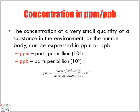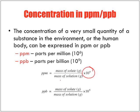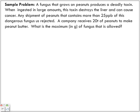We're going to use the following equation for parts per million: mass of the solute in grams divided by the mass of the solution in grams, but we're not multiplying it by 100, we're multiplying it by 10 to the power of 6. If it was parts per billion, it's still mass of the solute divided by mass of the solution, times 10 to the power of 9.